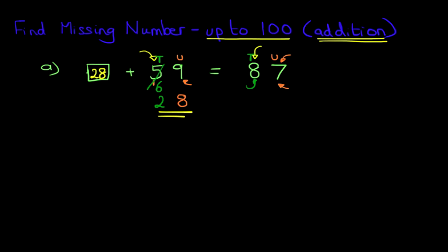So, 28 plus 59 equals 87. How did we do that? Well, we started at 59, and first, we added the units. We added 8 units, and we went from 59 plus 8. That gave us 67. And then, simply, we had to add 20 to give us 87. It's a nice, simple method.